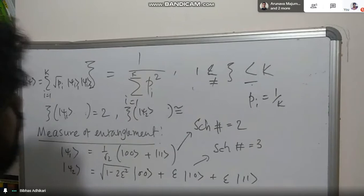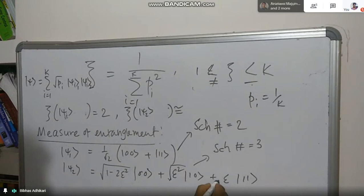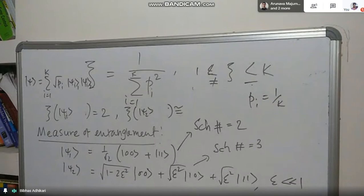This is called the density matrix. So p1 is one minus two xi squared, and p2 is epsilon squared — you may take epsilon to be close to zero, less than one.